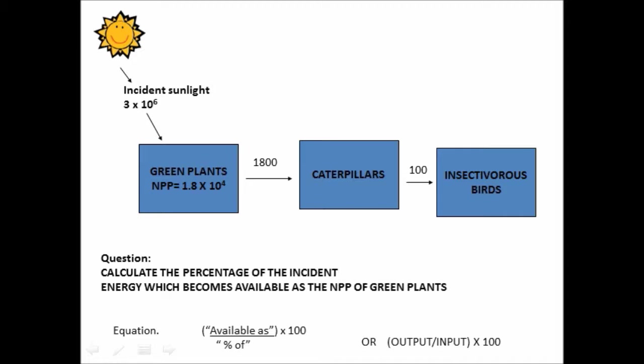And there's an equation which you can use for this. So if you see the words available as, put that on top of the equation line. And on the bottom of the equation line, the denominator, call that the percentage of in this particular case. And then you multiply the answer by 100. And that gives you the percentage available. Put more simply, it's output over input multiplied by 100.